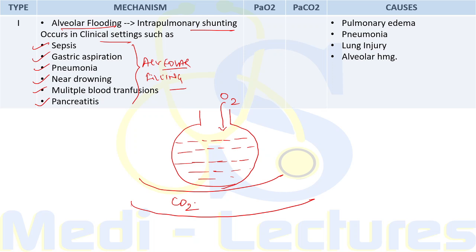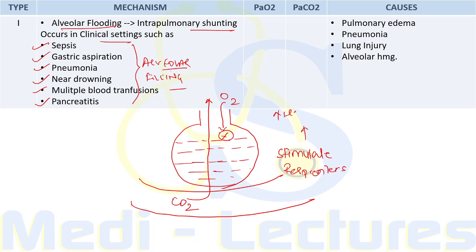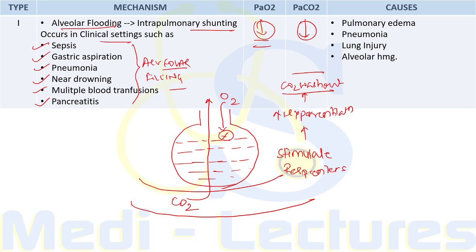CO2, being a highly diffusible gas, can leave the blood vessel and is exchanged through the alveolar surface. Since there is alveolar hypoxia, this stimulates the respiratory centers, leading to hyperventilation and CO2 washout. So in Type 1, when we see the ABG report, the PaCO2 will be decreased along with a decrease in PaO2.